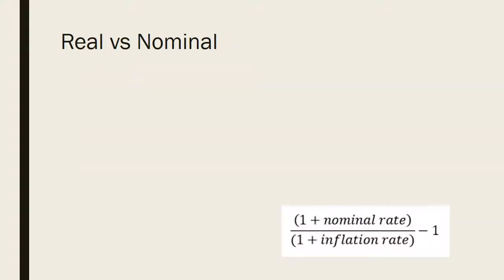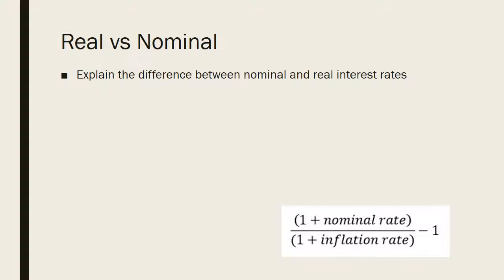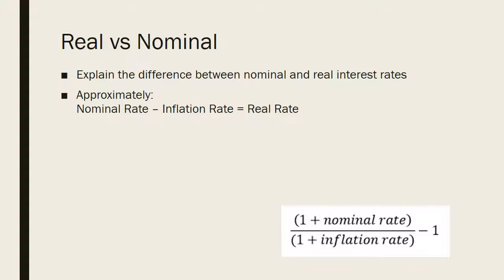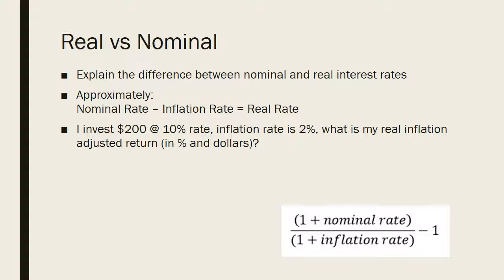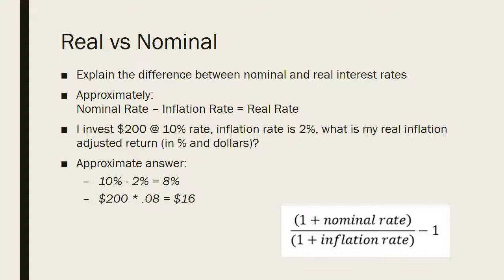What does this have to do with interest rates? There are real and nominal interest rates — you should know the difference. Approximately, the nominal rate minus the inflation rate equals the real rate. So if I invest $200 at 10% and the inflation rate is 2%, my real inflation-adjusted return is approximately 10% minus 2%, which is 8%, giving about $16 in inflation-adjusted dollars. The exact formula is: (1 + nominal rate) / (1 + inflation rate) − 1, which gives 7.8% — pretty close to 8%. The approximate answer overshoots by about 0.2%.